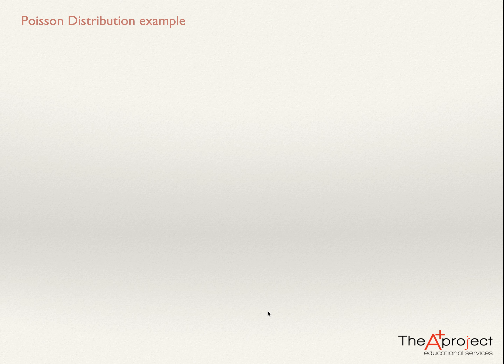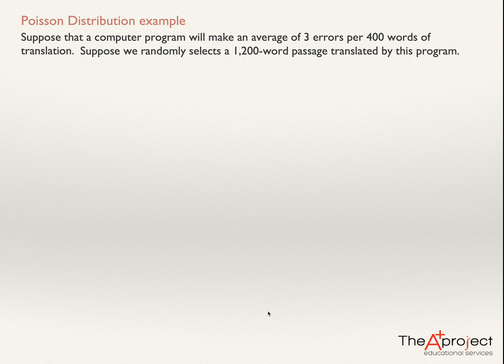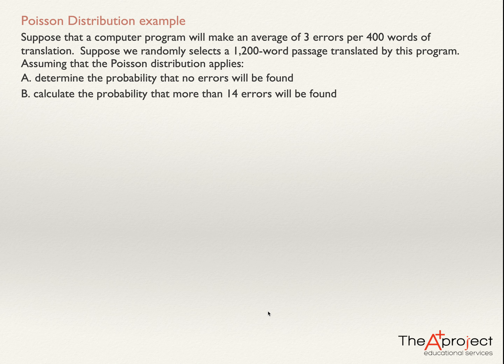I would like to show you how to solve a problem related to the Poisson distribution. Suppose that a computer program will make an average of three errors per 400 words of translation. Suppose we randomly select a 1200-word passage translated by this program. Assuming that the Poisson distribution applies, let's answer the following questions: A) determine the probability that no errors will be found; B) calculate the probability that more than 14 errors will be found; and C) find the probability that fewer than 9 errors will be found.